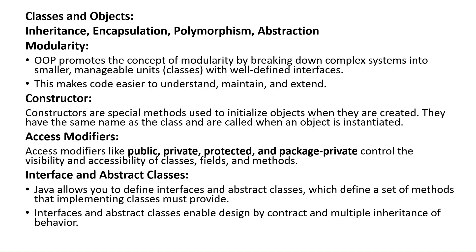When we use public, we can access all classes, fields, and methods anywhere. When we define a variable or method as private, we can only use it inside that class. When we mark a class as private, we can't access that class in another class. You will understand access modifiers better when you see some programs. The next one is interface and abstract classes.